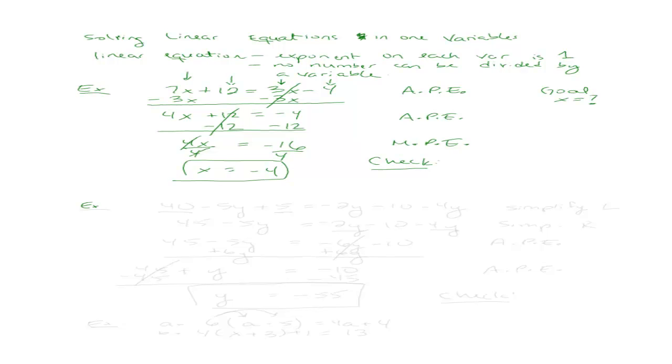Let me try another example because I know these can be a little bit tricky. So let's say we have 40 minus 5y plus 5 equals negative 2y minus 10 minus 4y. So the first thing we're going to do is we're going to simplify both sides. So let's start by simplifying the left. So in the left side of the equal sign, I can simplify the constants 40 and 5. I can add those two together.